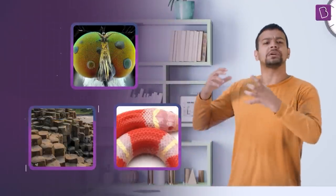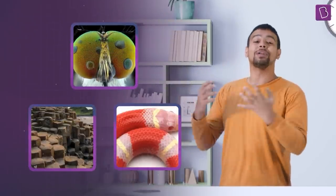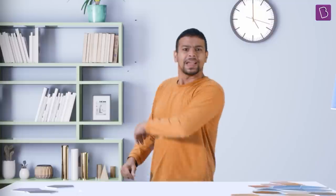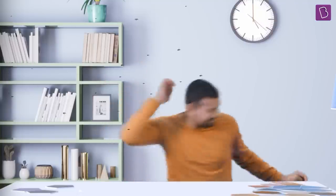In fact, this doesn't happen only in honeycombs. Have you seen this? There are stable hexagonal packing all around in nature. So now, you know why honeycombs are hexagonal. Can you find more examples of hexagons from nature? Let me know in the comments and I will see you until next time.